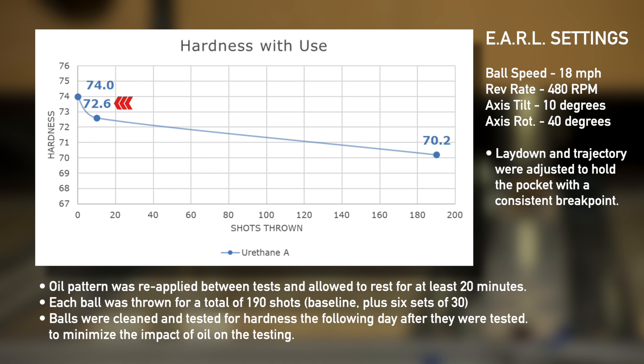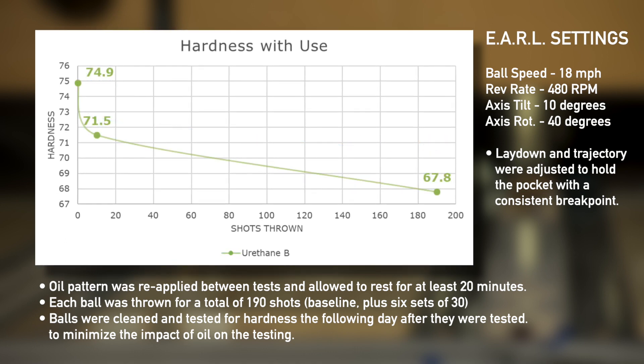Testing showed that the first ball softened by 1.4 points after 10 shots and by 3.8 points after 190 shots. The second ball softened by 3.4 points after 10 shots and 7.1 points after 190 shots.